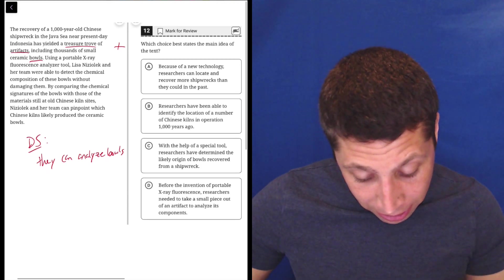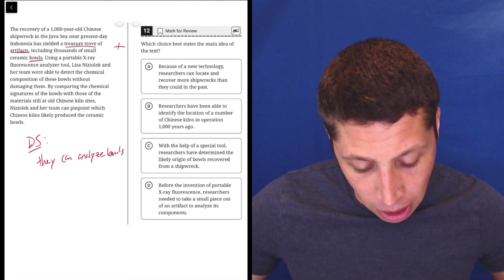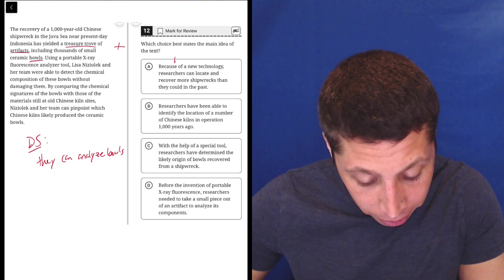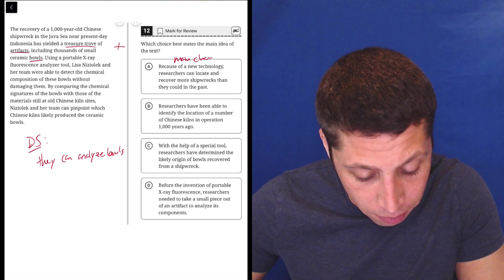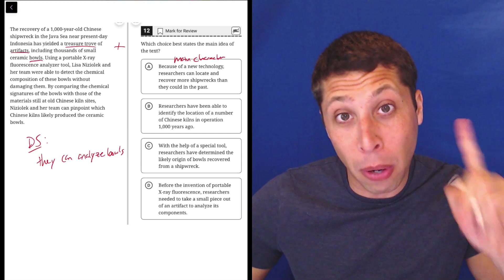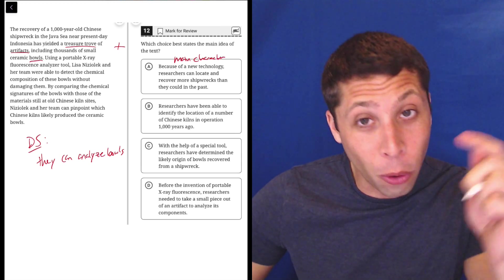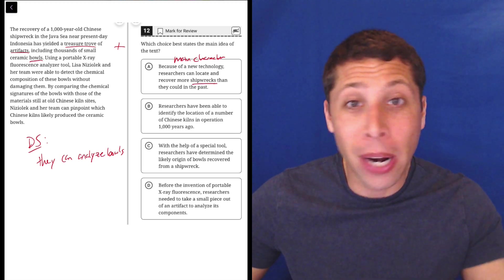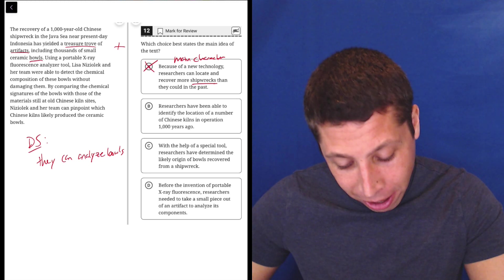A, so what's the main idea of the text? Because of a new technology, researchers can locate and recover more shipwrecks than they could in the past. This is about the wrong main character. The main character of the passage, we said it early, was the bowls. The whole time they're talking about the bowls. Are they talking about the shipwrecks? No. The shipwreck is a side character. It's the bowls that are the main character.